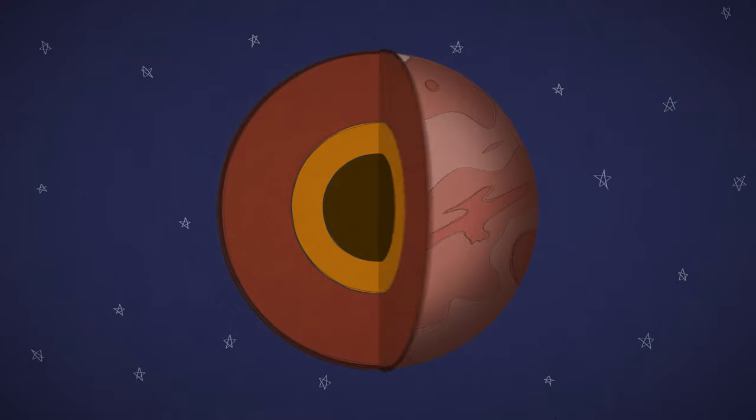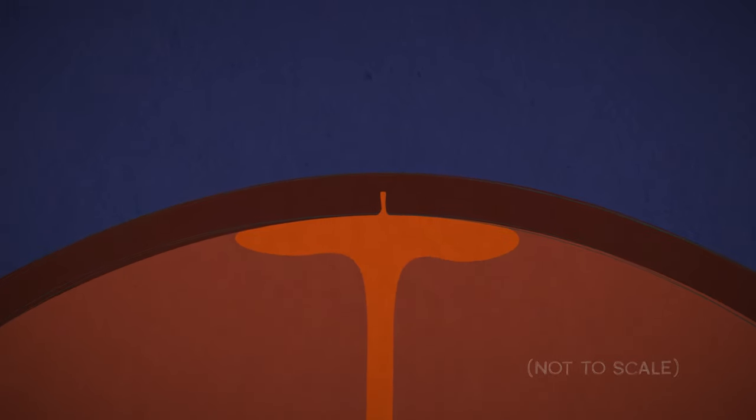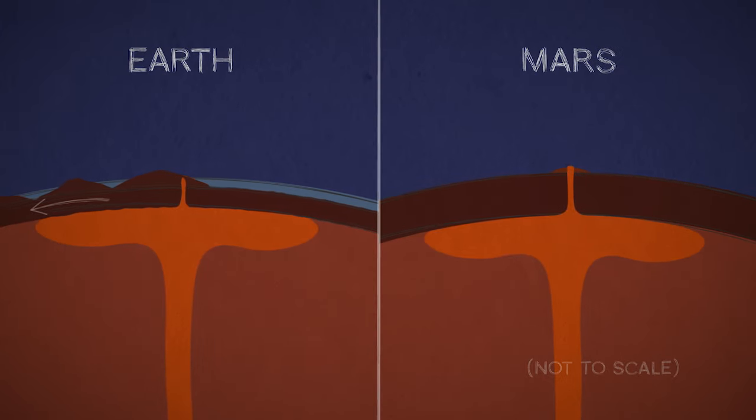Early on, Mars had really active volcanoes, fed by hot, rising blobs of rock from deep inside. But Mars doesn't have tectonic plates that move over hotspots, like in Hawaii. So instead of getting a chain of volcanoes, you could keep building one huge one.